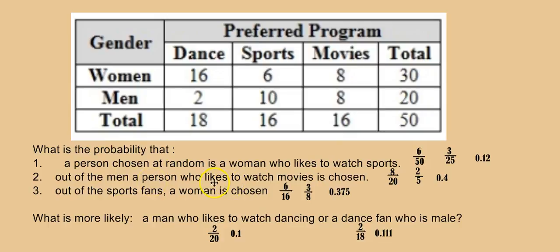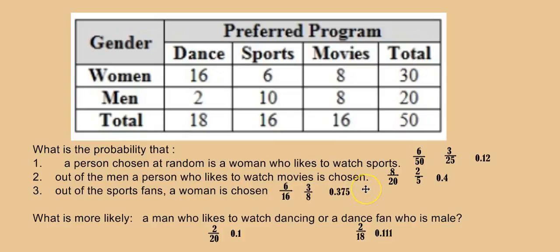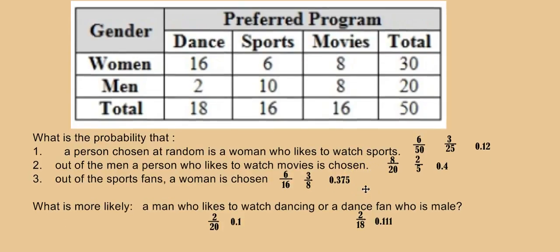Question two: out of the men, what is the probability that the person likes to watch movies? We're only looking at the row for men — 20 men total — and eight of them like movies. So the probability is 8 out of 20, simplified to 2 out of 5, which is 0.4. Question three: out of the sports fans, what is the probability that a woman is chosen? The sports fans column totals 16, and 6 of them are women — 6 out of 16, simplified to 3 out of 8, or 0.375.